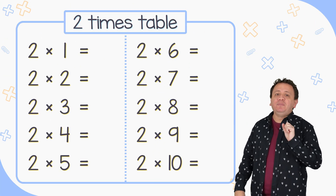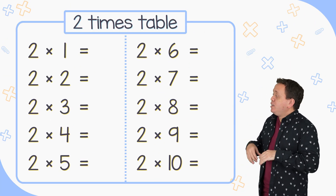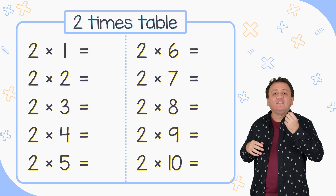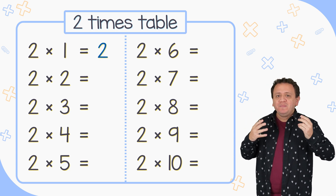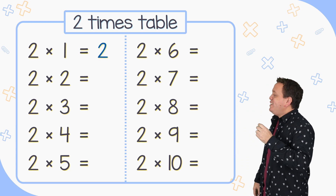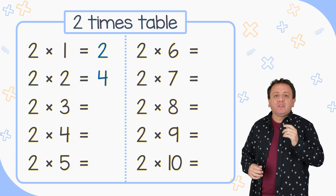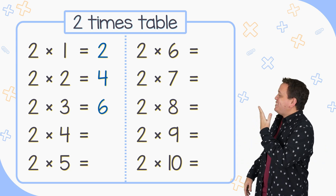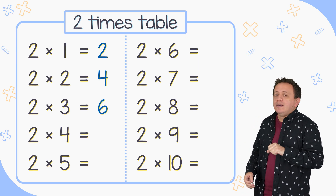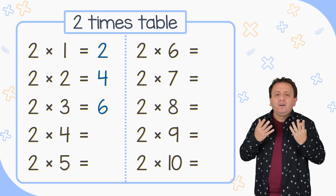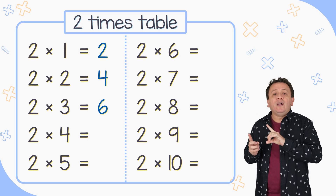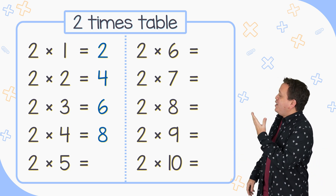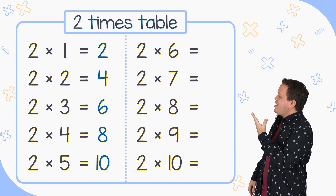Let's continue with the 2 times table. 2 times 1 equals 2. 2 times 2 equals 4 and 2 times 3 equals 6. 2 times 4 is equal to 8. 2 times 5 equals 10.